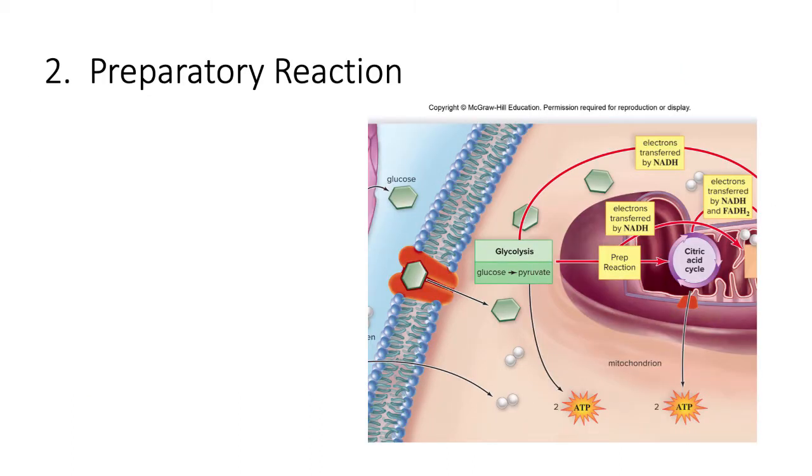The second stage of cellular respiration is the preparatory reaction. This stage prepares pyruvate, which was produced during glycolysis, for the citric acid cycle reactions. This happens in the mitochondria. Some electrons are also produced in this phase.